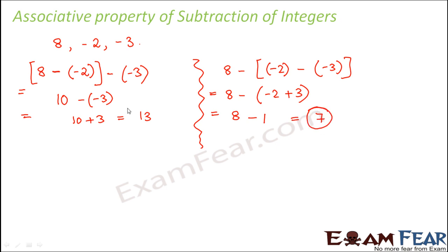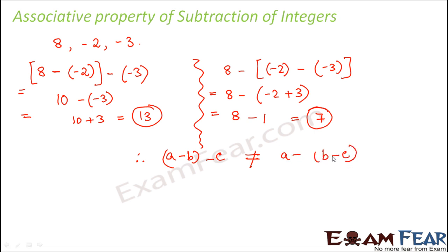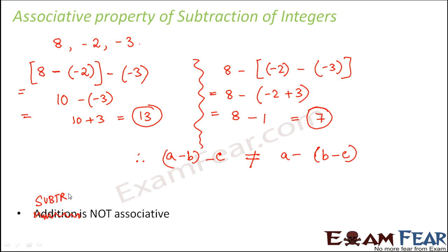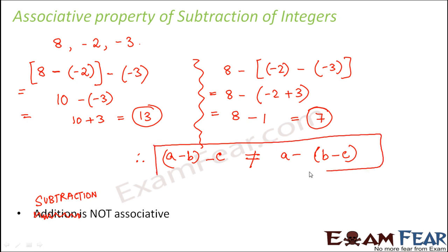Here we get 7 and there the result is 13. Both are not equal, so we can say that (a minus b) minus c is not equal to a minus (b minus c). Therefore, associative property is true for addition but not for subtraction. Subtraction is not associative, while addition is associative — these are important things to remember.